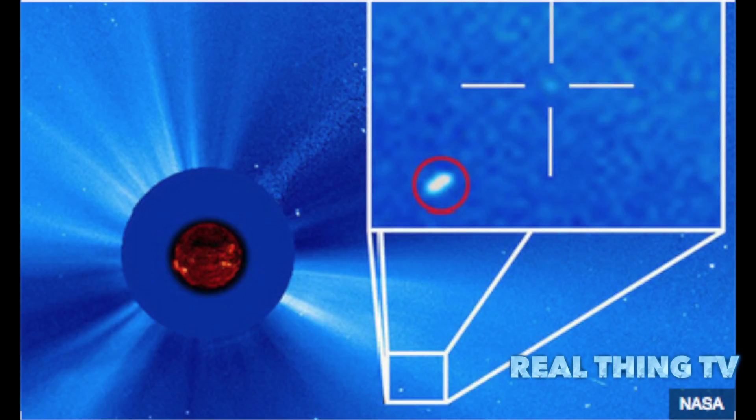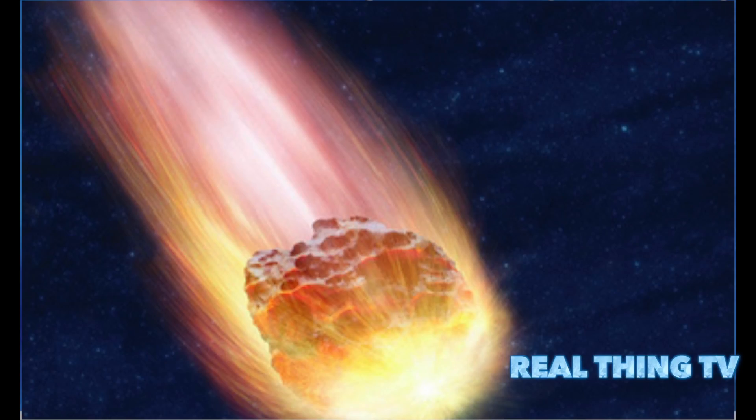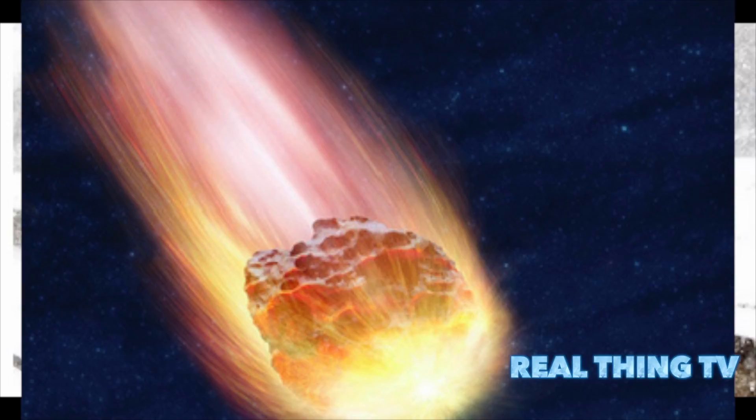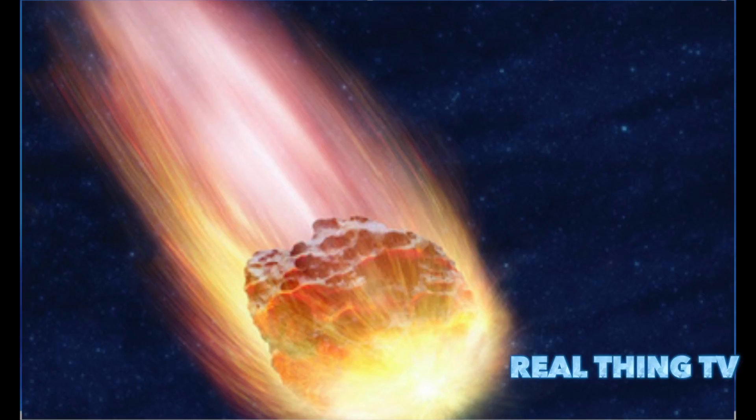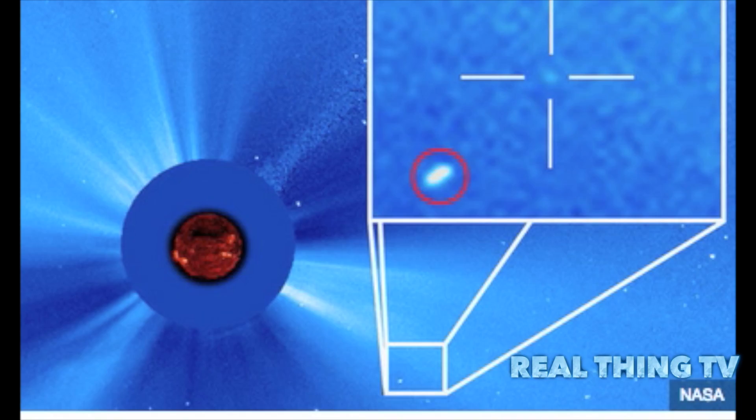The new comet was discovered this week as online conspiracy theorists continue to claim a huge space rock will wipe out mankind by the end of the Blood Moon lunar event on September 28. The flaming space rock was also the 3000th Sun-grazing comet to be discovered by the Solar and Heliospheric Observatory.